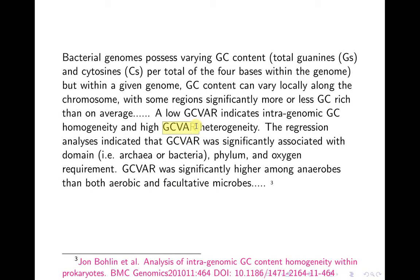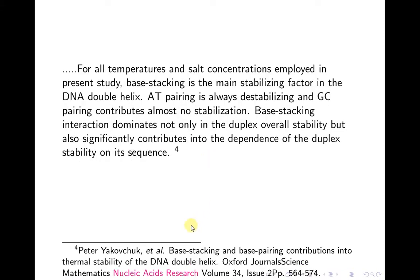So it is very clear that the GC content can help us to study the genome of a species. It also helps us to understand the advancement of a species in the evolution process. There is another paper written by Peter Ekoscheuk and others, titled 'Base Stacking and Base Pairing Contributions into the Thermal Stability of DNA Double Helix.' There are many papers that talk about bendability, thermostability, and a few other transitions, and this is one of those papers.